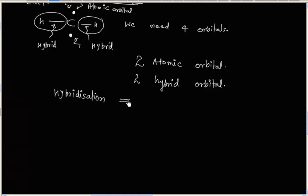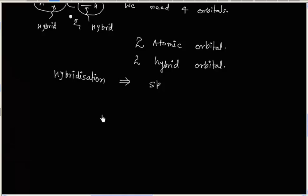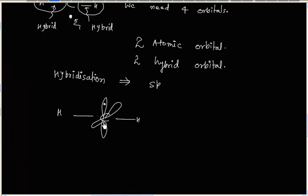What is the shape? Since hybridization is sp, the shape will be linear. This is the orbital picture diagram, and the shape or geometry is linear.